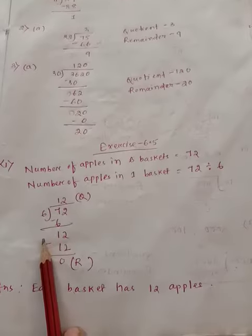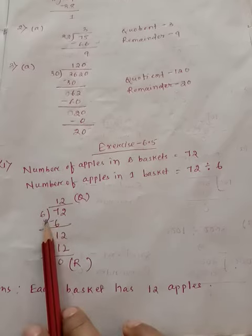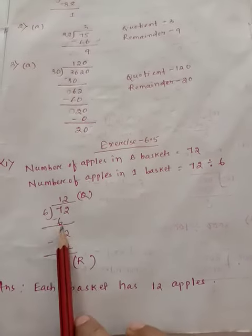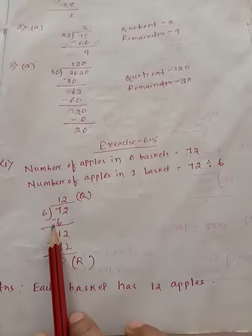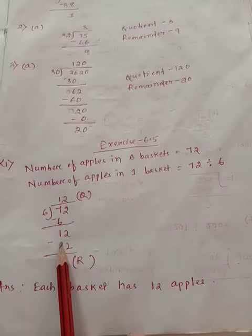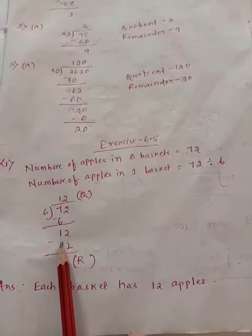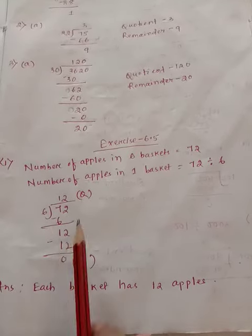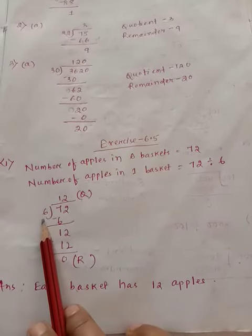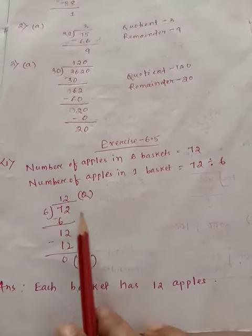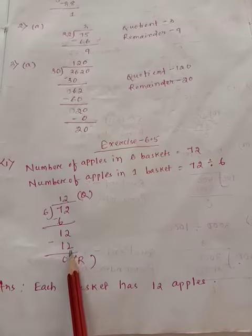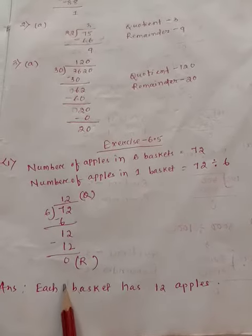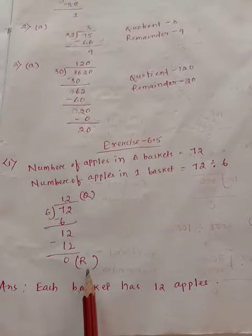So we will work out here. In the 6 times table, 6 ones are 6. We will subtract 7 minus 6, then we will get 1. We will bring 2 down. Now in the 6 times table, 6 twos are 12. So after subtracting 12 minus 12 we are getting 0.